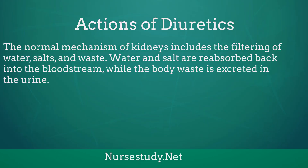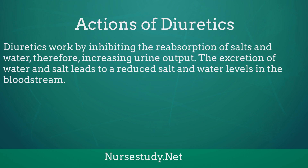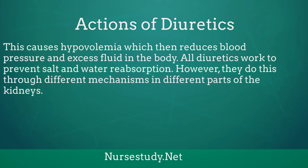Actions of diuretics: the normal mechanism of kidneys includes filtering of water, salts, and waste. Water and salt are reabsorbed back into the bloodstream while body waste is excreted in the urine. Diuretics work by inhibiting the reabsorption of water and salt, therefore increasing urine output. The excretion of water and salt leads to reduced salt and water levels in the bloodstream, causing hypovolemia, which then reduces blood pressure and excess fluid in the body. All diuretics work to prevent salt and water reabsorption, though they do this through different mechanisms in different parts of the kidneys.